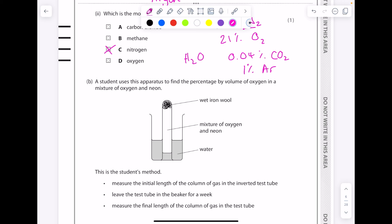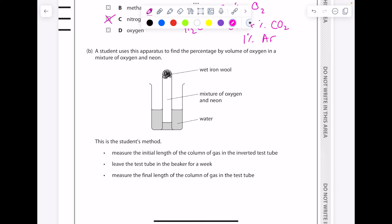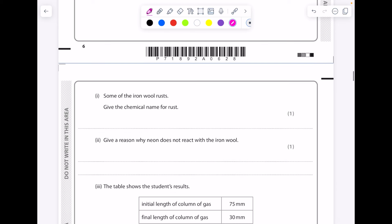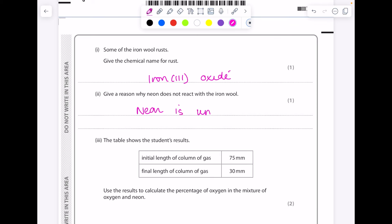A student uses this apparatus to find the percentage by volume of oxygen in a mixture of oxygen and neon. This is the student's method: measure the initial length of the column of gas in the inverted test tube, leave the test tube for a week, measure the final length. Some of the iron wool rusts. Give the chemical name for rust. It's actually iron(III) oxide. Give a reason why neon does not react with the iron wool. Neon is unreactive. Remember it's a noble gas because it has a full outer shell.